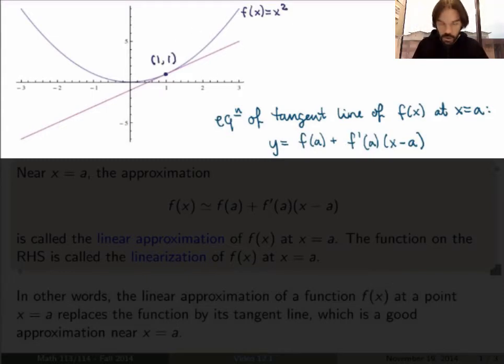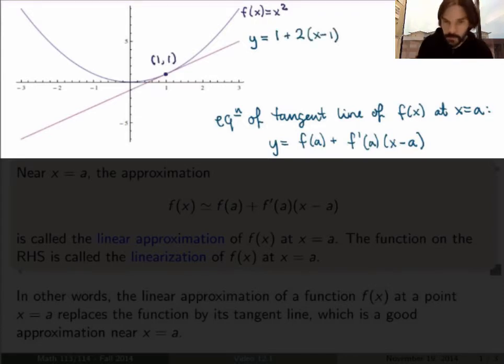So in my little graph, for example, here the function is x squared and the tangent line at x equals 1 will be given by the equation y equals 1 plus 2 times (x minus 1). Ok, so we know that very well by now.